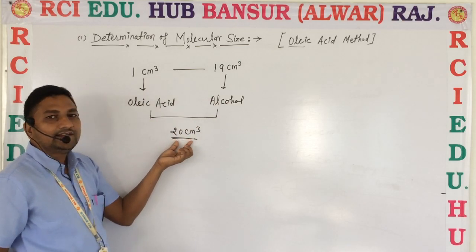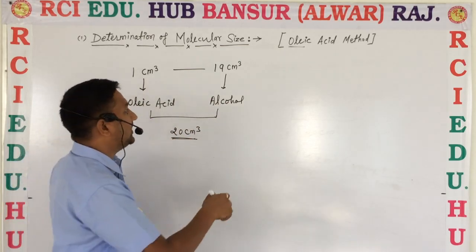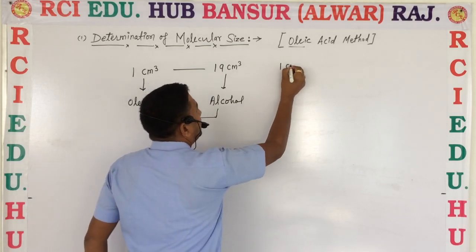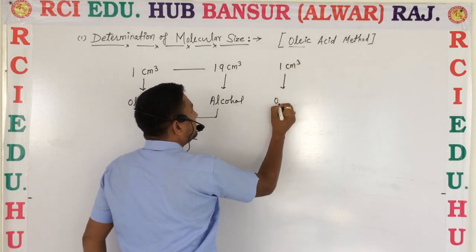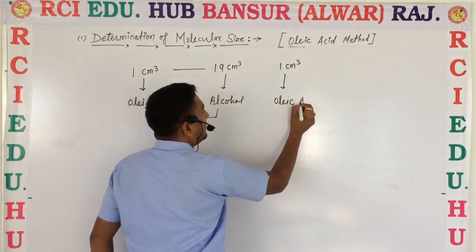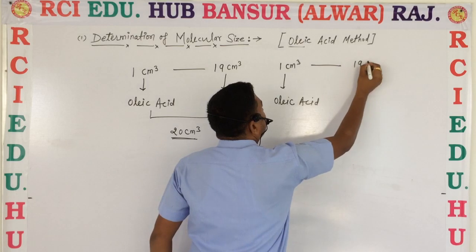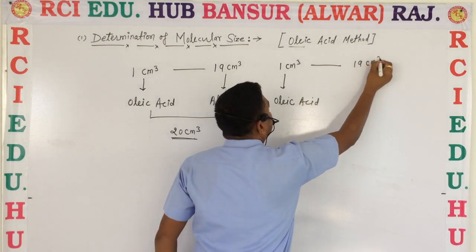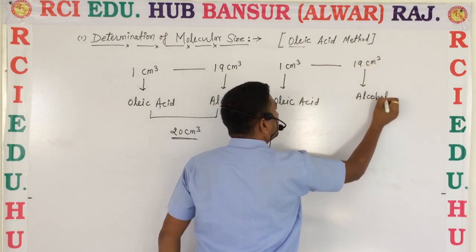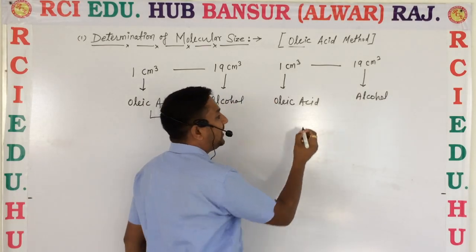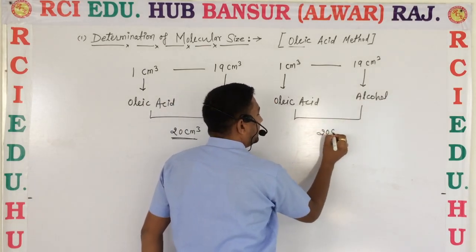For a 20 cm³ solution, we prepare the solution as follows: we take 1 cm³ of oleic acid and add 90 cm³ of alcohol to it. So the solution we prepare is 20 cm³ of oleic acid in alcohol solution.